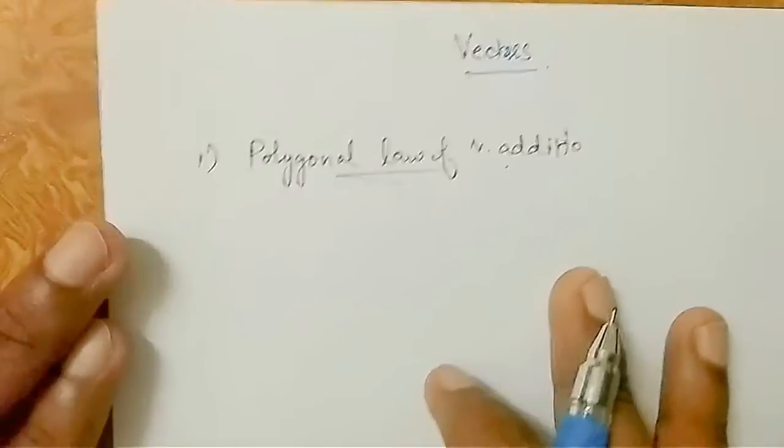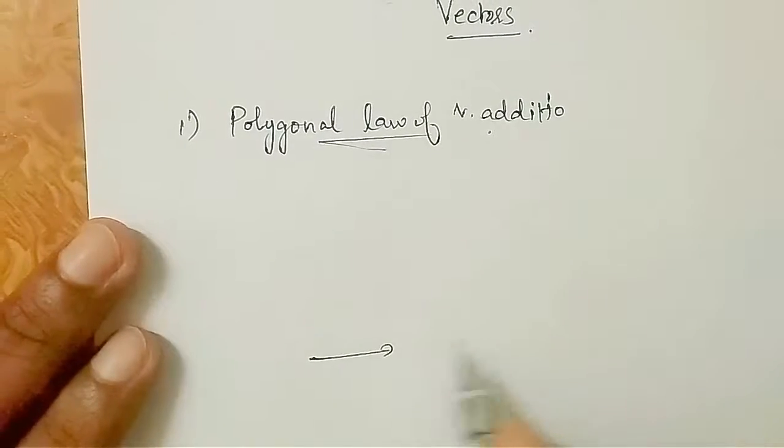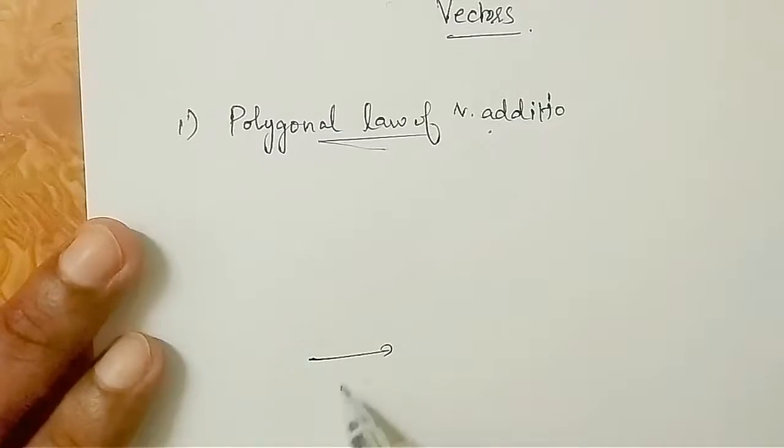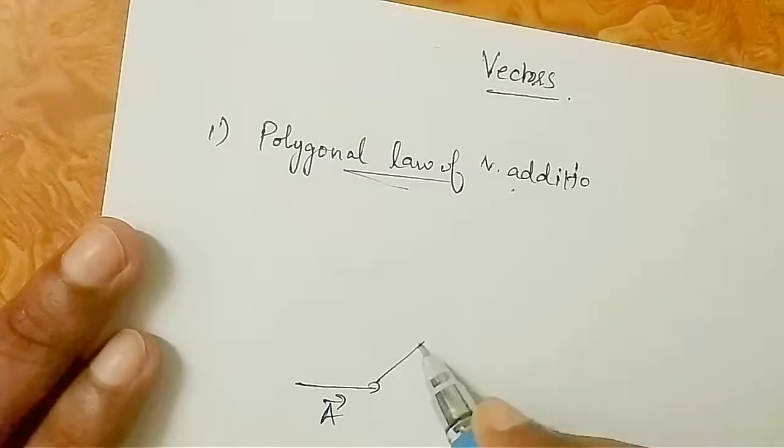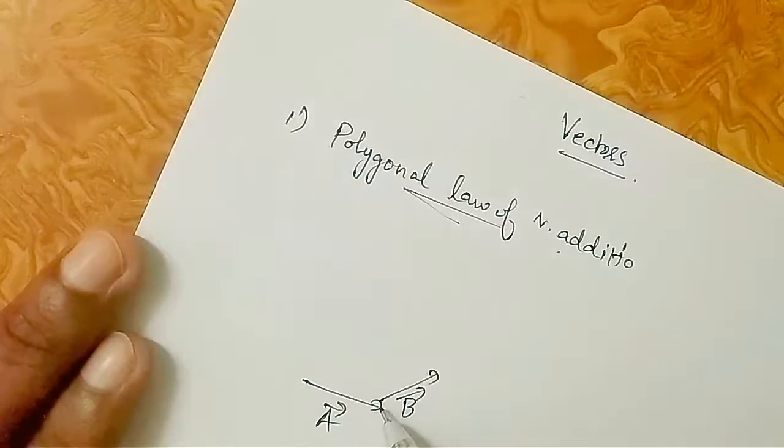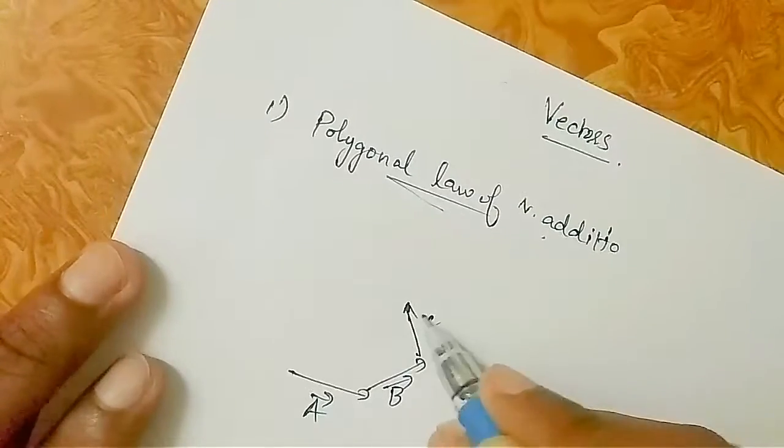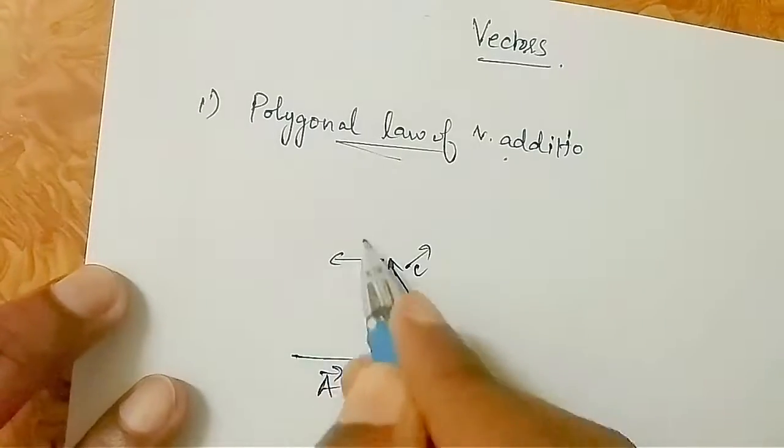In this law, I am going to show you how to add multiple vectors. This is vector A and this will be vector B. The tail of one connects to the head of the previous one. This is C and this is D.